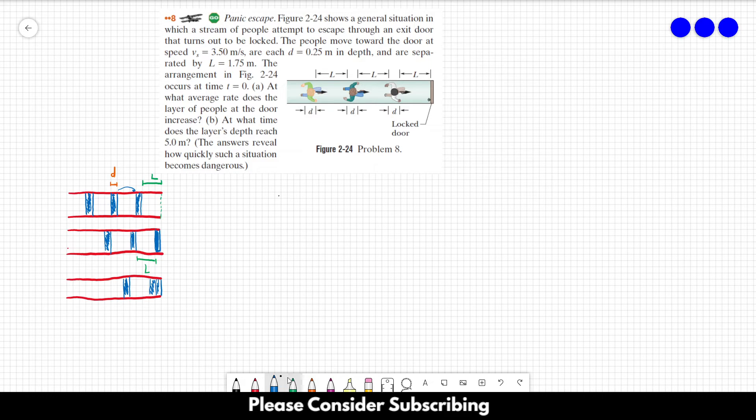The third person has to travel L to reach the end of the layer. What we can notice by this drawing is that when someone travels L, the distance of 1.75 meters, the layer increases by D, 0.25 meters.